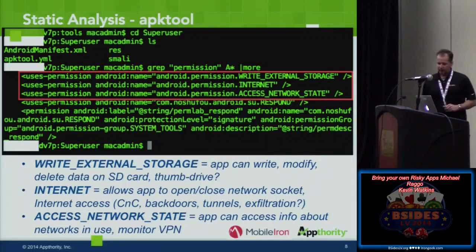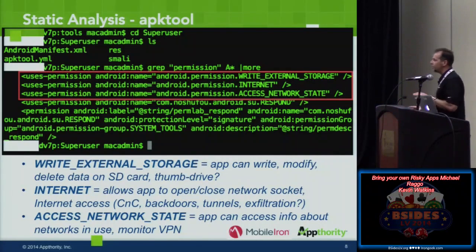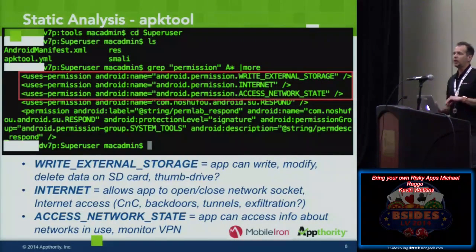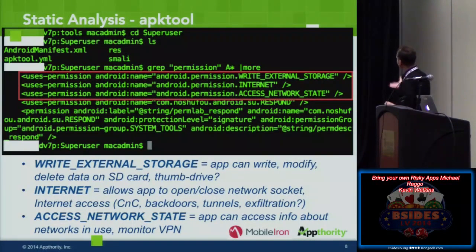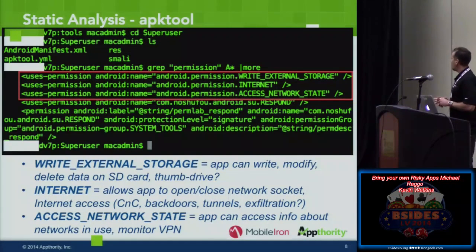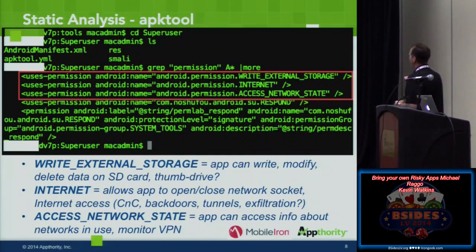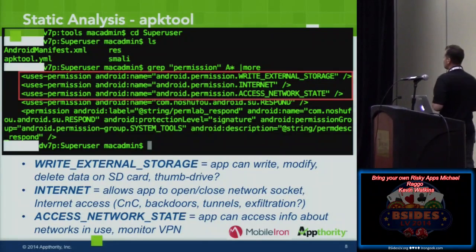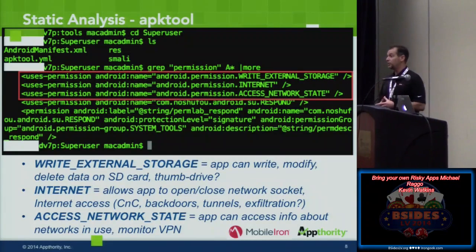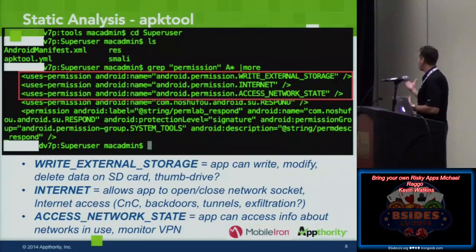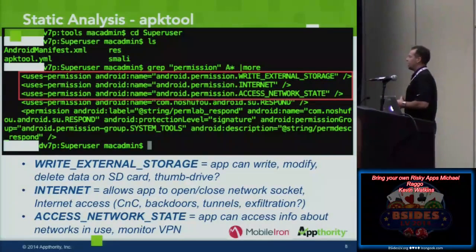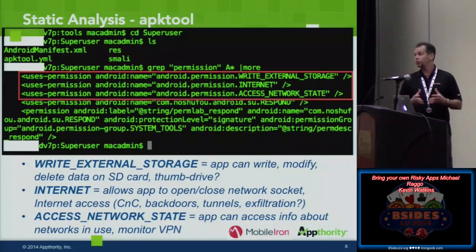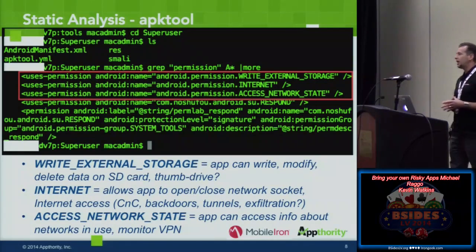If you root your Android device, what kind of information stems from that rooting? Using APK tool to break down an APK and reveal the Android manifest shows it can write to external storage, open a socket for network connectivity — which could lead to remote command and control, exfiltration, back doors — and access the network state. That could be quite revealing if you're using a VPN or per-app VPN to connect back to the corporate network.